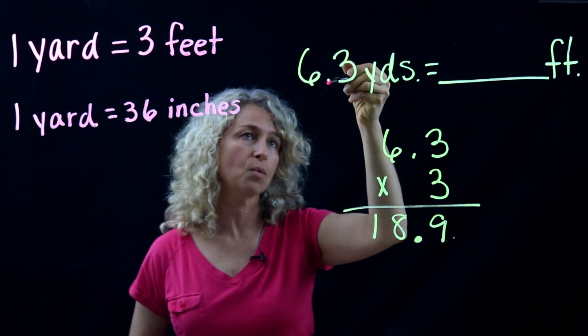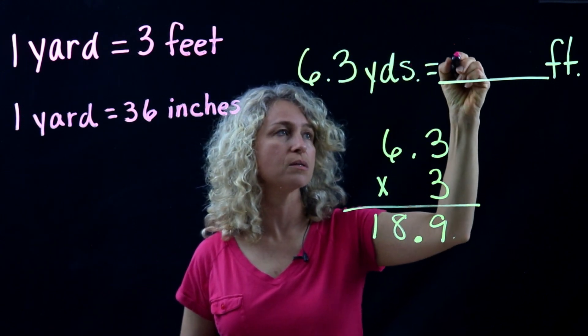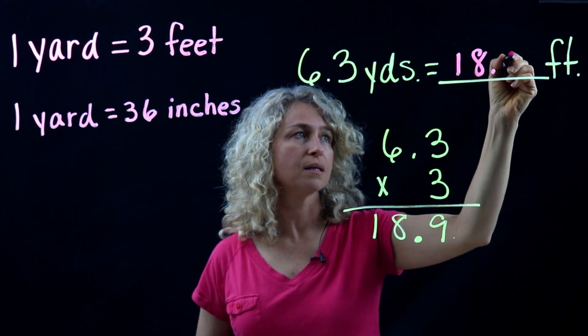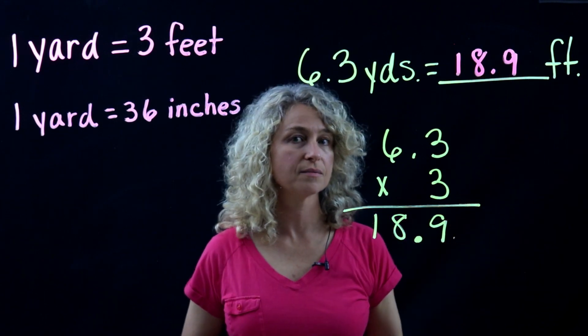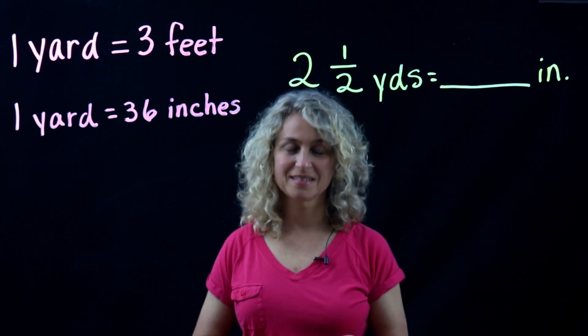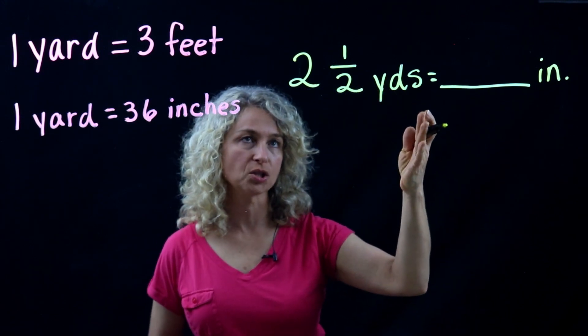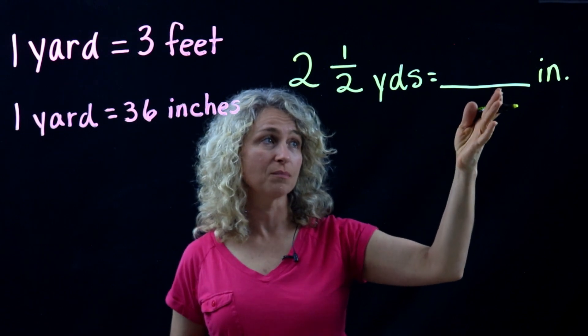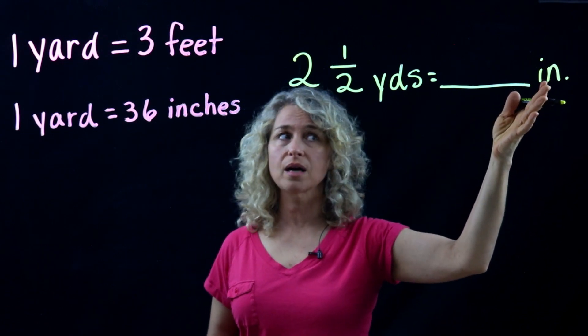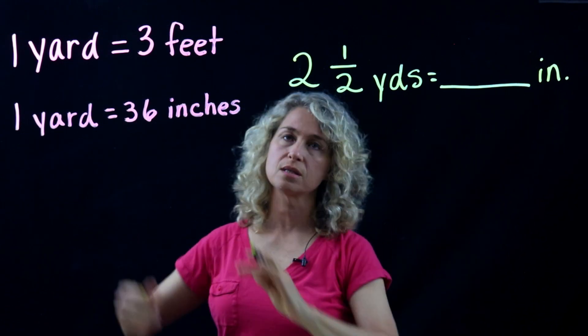One space over, one space over, and 6.3 yards equals 18.9 feet. Okay, all right, so let's look at this one with a fraction. Two and a half yards equals blank inches.